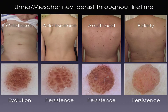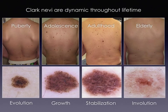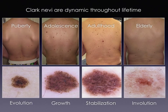In fact, a few globular nevi are seen throughout all ages. Instead, reticular — also called Clark nevi — are dynamic throughout lifetime, whereby they develop around puberty, acquire during stabilization a reticular pattern, and undergo spontaneous involution after the fourth decade of life.